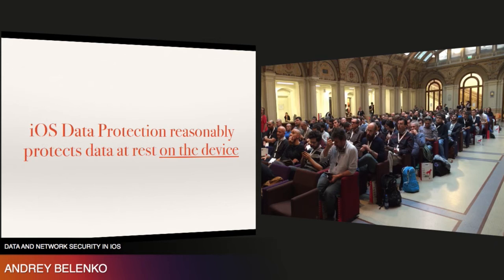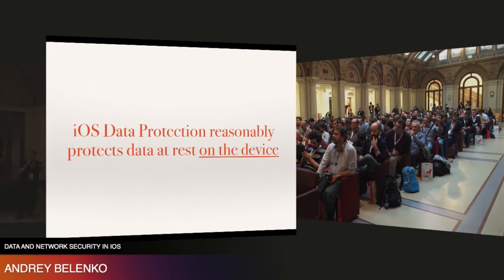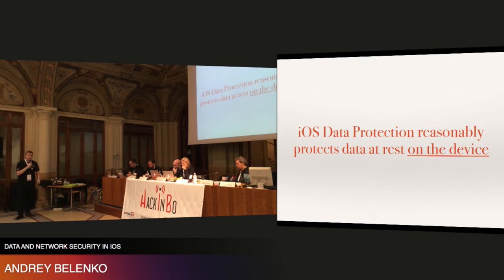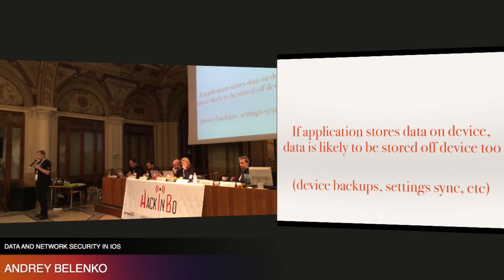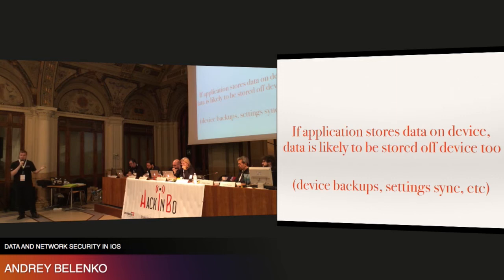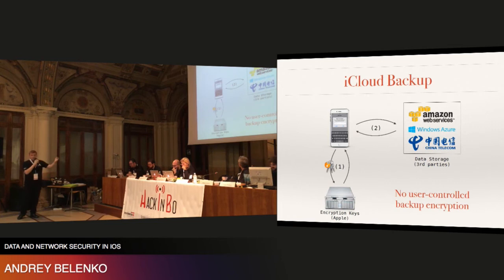The bottom line of this first part of the talk is that iOS data protection provides reasonably good data-at-rest protection, as long as we're talking about protection on the device. However, the real concern is that if an application stores something on the device, it is almost certain that this data will cross the device boundary — going to the cloud, local backups, or somewhere else. We live in a world where everything is backed up to your local machine, Dropbox, iCloud, or whatever.